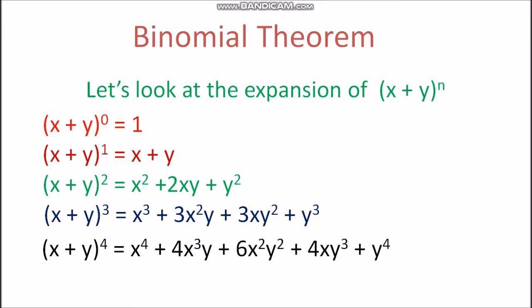Then (x + y)^1 equals x + y. Next, (x + y)^2 — we can use the formula for (a + b)^2. Then (x + y)^3, which gives x^3 + 3x^2·y + 3x·y^2 + y^3.